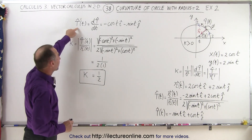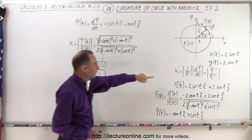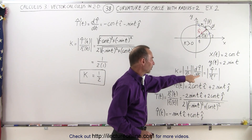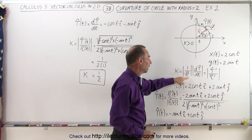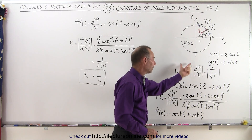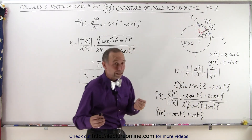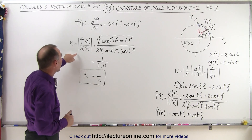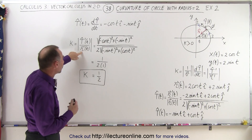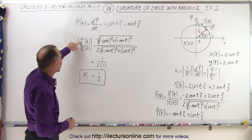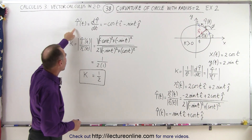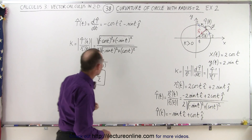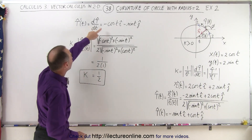Now we need to find the derivative of the unit tangent vector, because we're trying to find the curvature, which is the derivative of this with respect to the parametric variable, times 1 over the magnitude of the velocity along the path. The velocity is defined as the derivative of the position vector, and then we take the derivative of the unit tangent vector, which will give us the curvature.